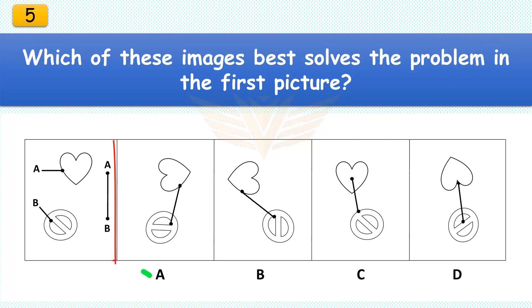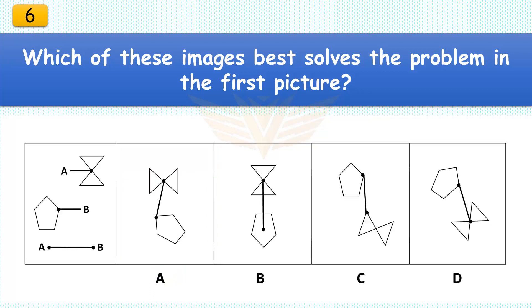Which of these images best solves the problem in the first picture? The correct answer is A. Rotate the heart object 45 degrees and rotate the cancel sign almost 180 degrees.